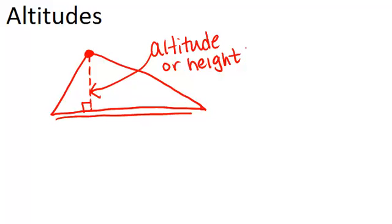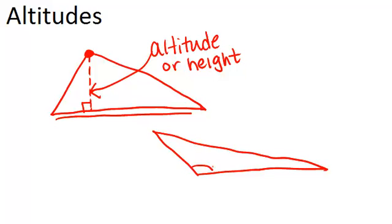In this case, the altitude was inside the triangle, but sometimes the altitude will be outside the triangle. For example, if you have an obtuse triangle where one angle is bigger than 90 degrees, the altitude from this point will be outside the triangle. To see it, extend the base and drop a perpendicular line from this point. The altitude would be right here, outside the triangle.